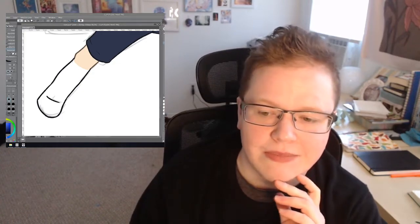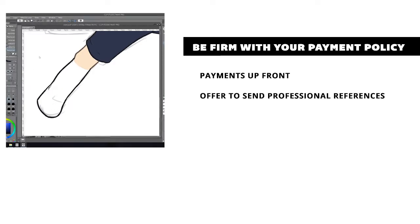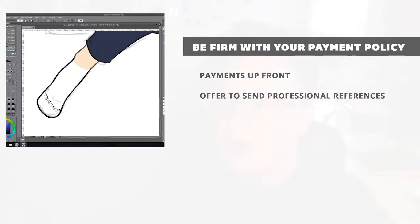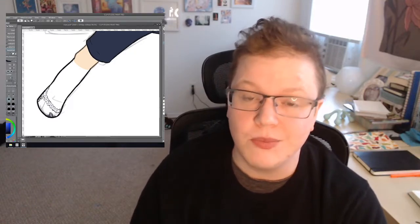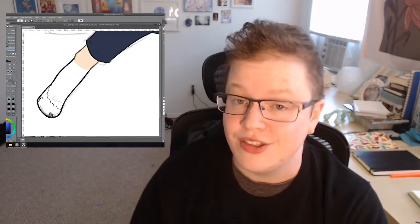Another boundary that comes up a lot is making exceptions on payment policy. My policy is that I require payment upfront, and sometimes people will ask for an exception — like 'Can I pay you half now?' Honestly, I just stick to repeating my policy in that case. I say my policy is that I accept payment upfront, and I'd be happy to provide references from other clients if they're nervous, but I don't bend on that policy. You don't owe anyone an explanation. Just be polite but firm: 'I'm sorry, but this is my policy.'